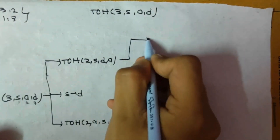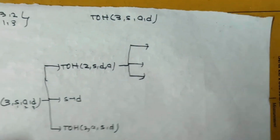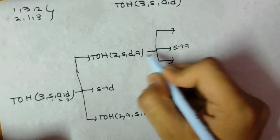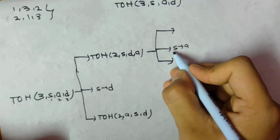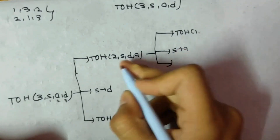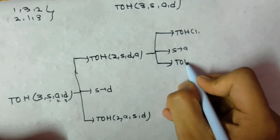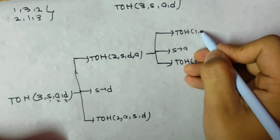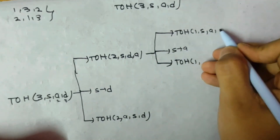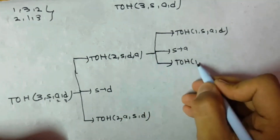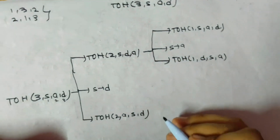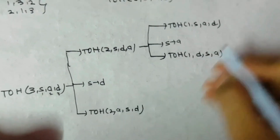Now do the same thing for each subtree. For the S-to-A node, the middle one is always first to last, so S to A. In the above portion, decrease one: 2 minus 1 is 1. Follow sequence 1-3-2, then in the below portion follow 2-1-3.